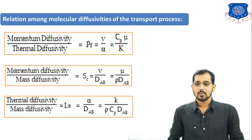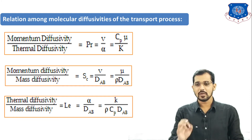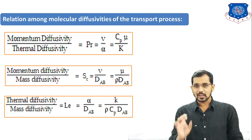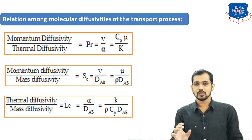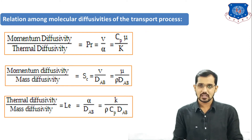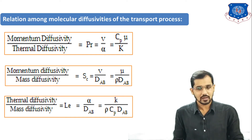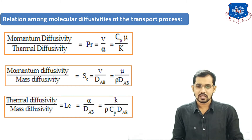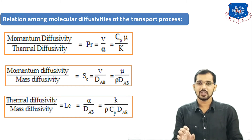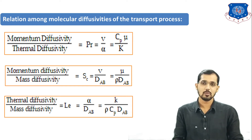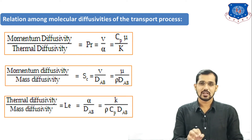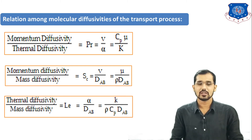The first relation is between momentum diffusivity and thermal diffusivity. The ratio of momentum diffusivity to thermal diffusivity is represented by the Prandtl number Pr, equal to ν/α, which equals CpμK — where Cp is specific heat, μ is dynamic viscosity, and K is thermal conductivity. Here K is thermal conductivity, not mass transfer coefficient.